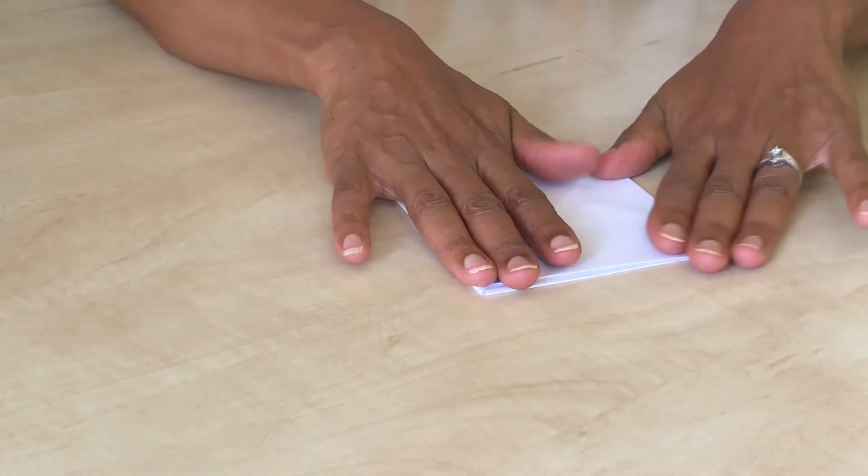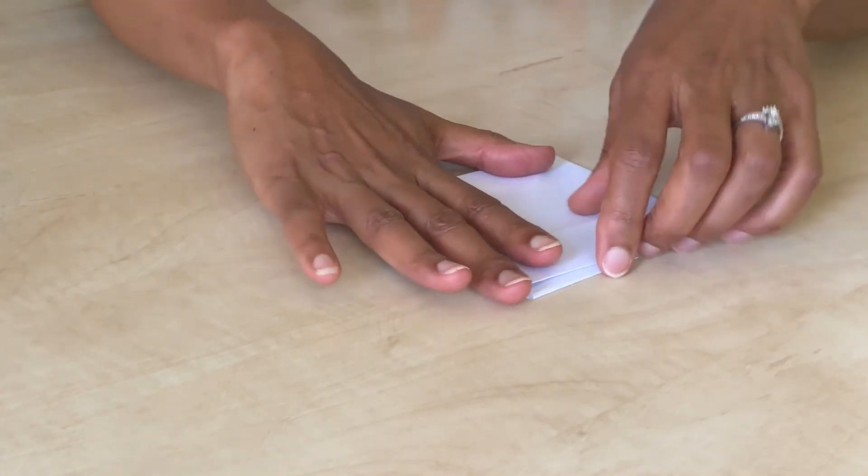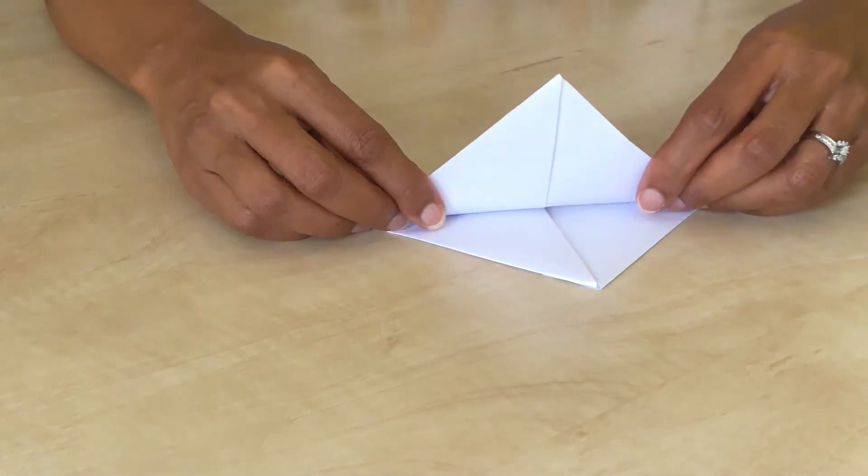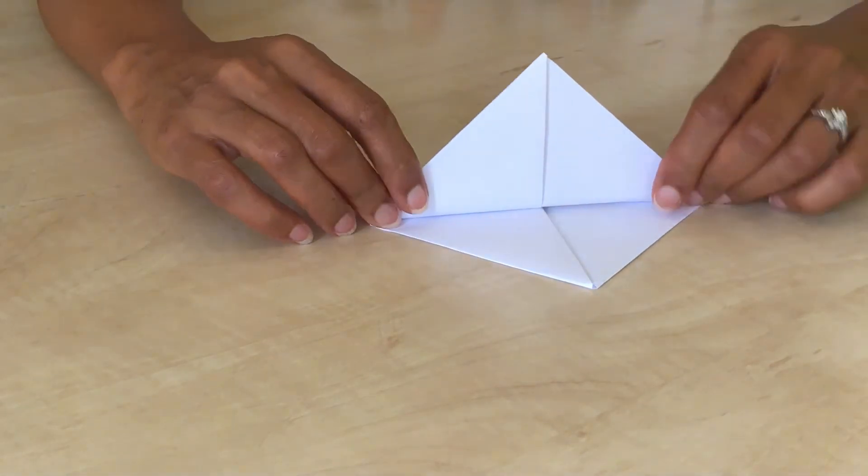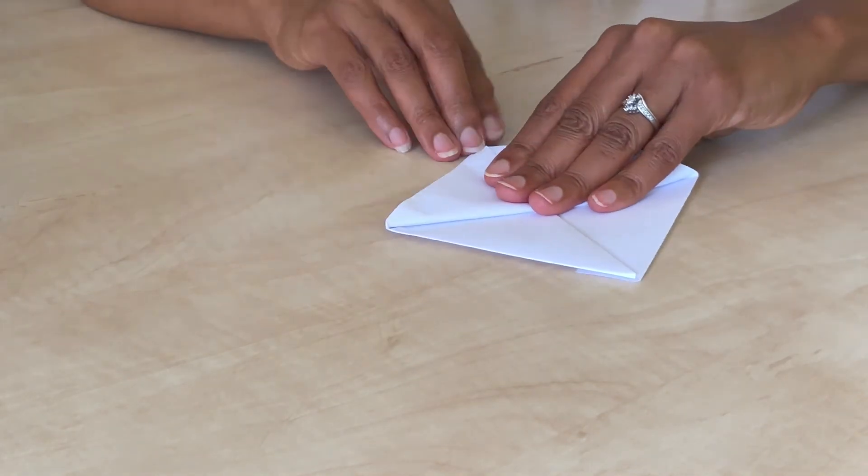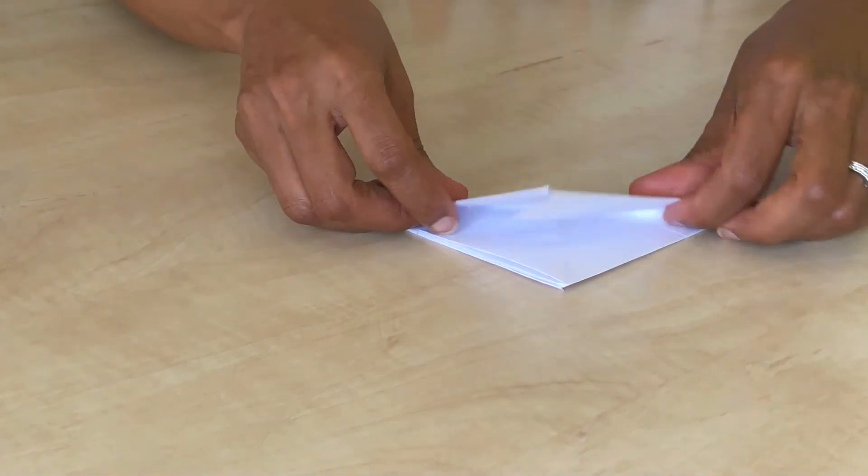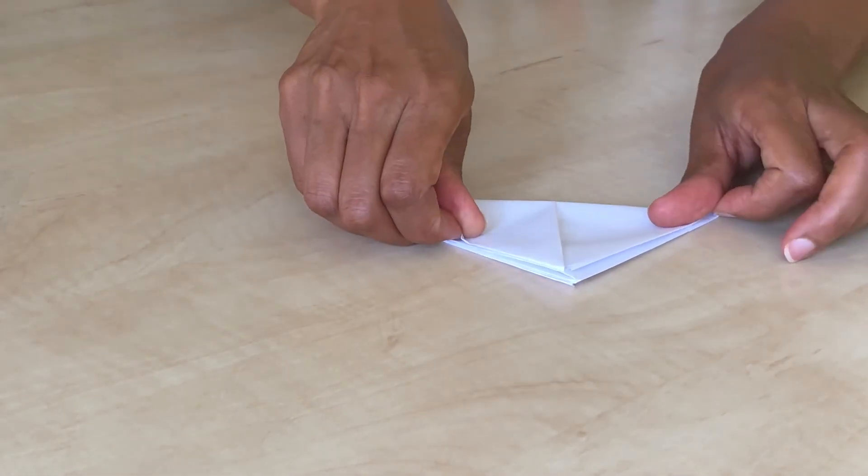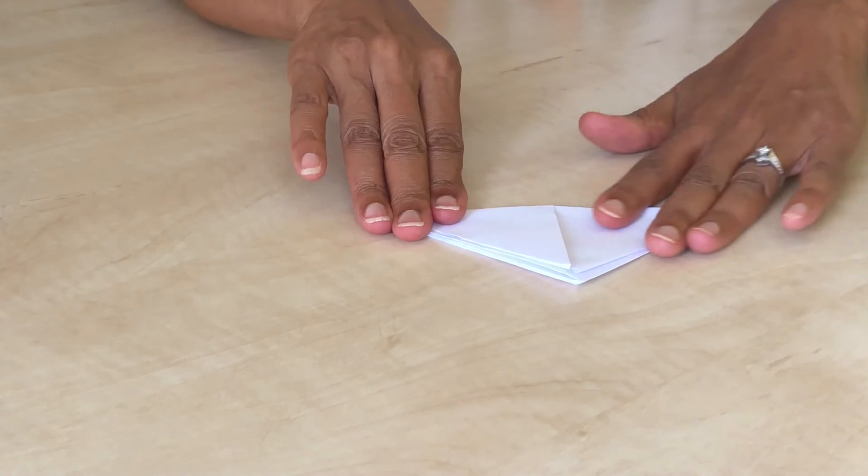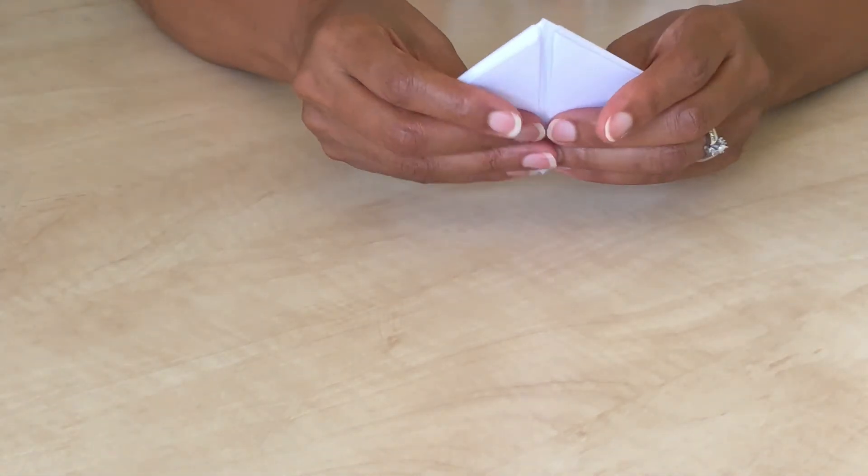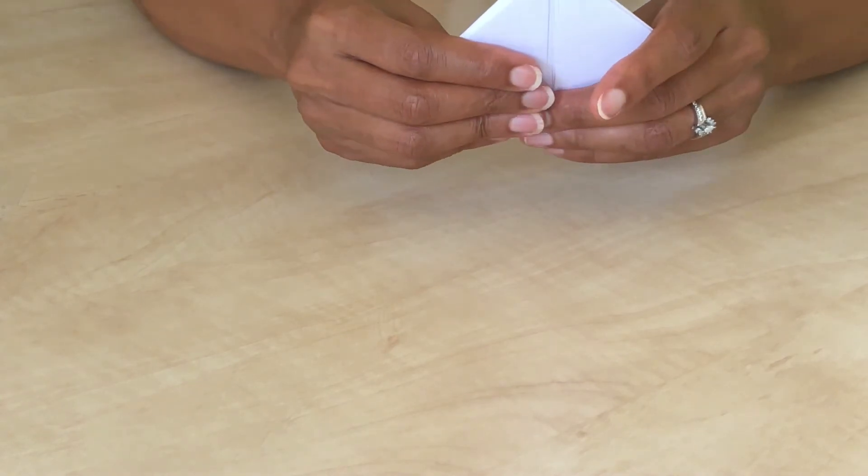Fold the bottom flaps of the square on both sides so you are left with a triangle shape. Pull out the middle of the triangle to form a square. Pull out the middle of the square.